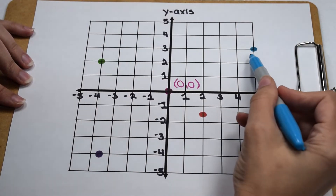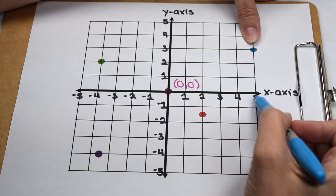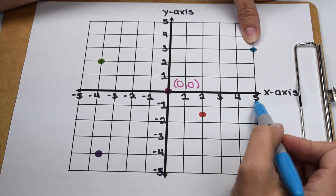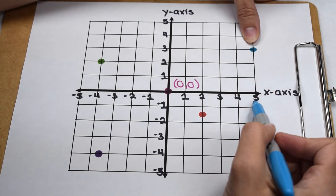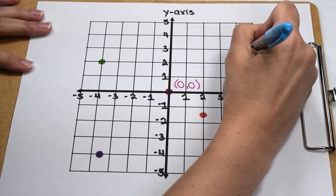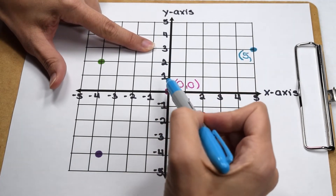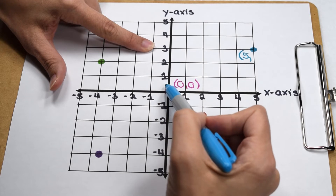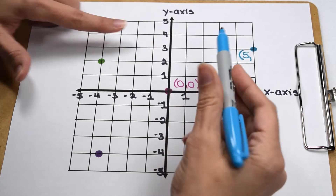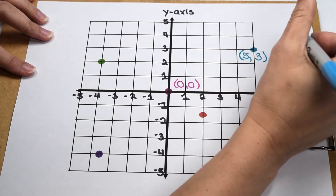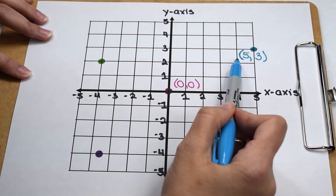Let's start here in quadrant 1. To determine the location of this point, we start by seeing where it lines up on our x-axis. We can see that we're to the right of our origin, so we know our x-value is going to be positive. We notice that our point lines up with the 5 on the x-axis, so the x-value in our ordered pair is positive 5. Next, we look at its y-value. Coming across, we can see that we're above the origin, so our y-value is going to be positive. Our point lines up with the 3 on the y-axis, so positive 3 is the y-coordinate. The ordered pair that best represents this point is (5,3).